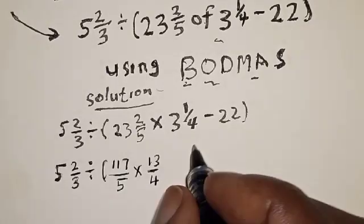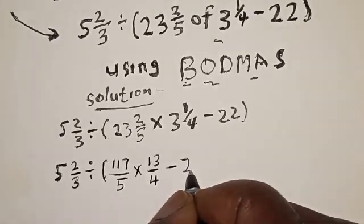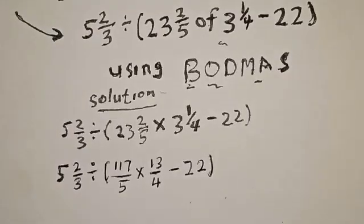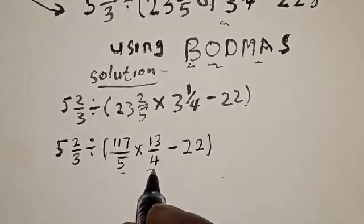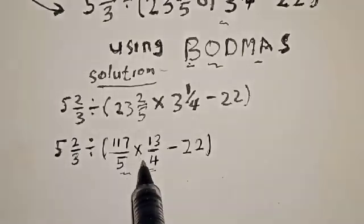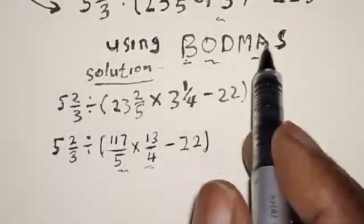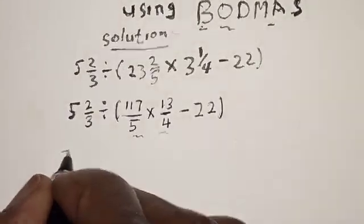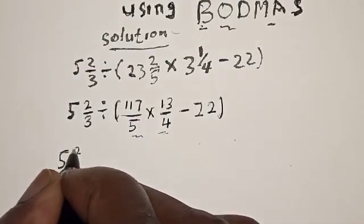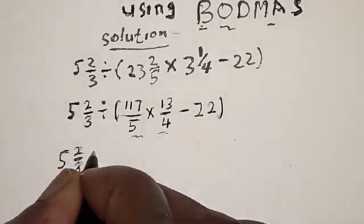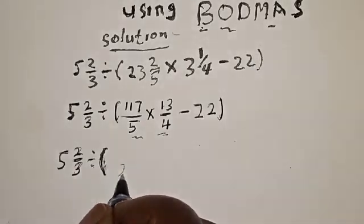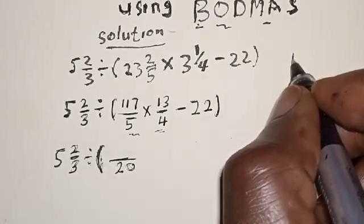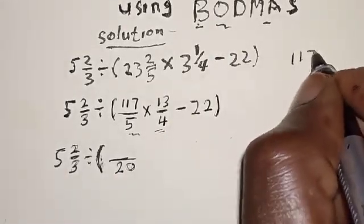Then minus 22, close bracket. Now we can multiply these two together inside the bracket. There is no division in the bracket but we have multiplication, so we work on the multiplication. We have 5 and 2/3 divided by: 5 times 4 = 20 for the denominator, and the numerator is 117 times 13.